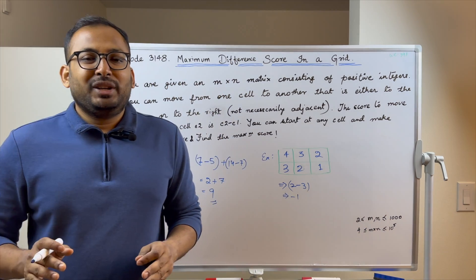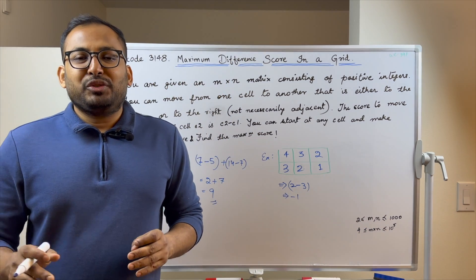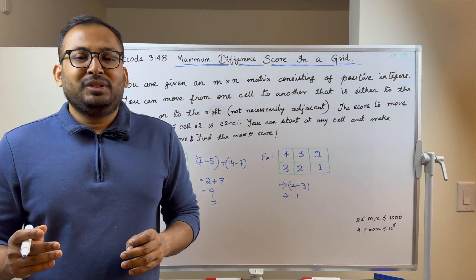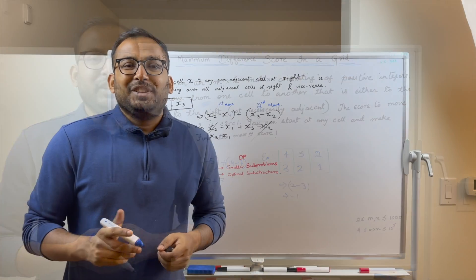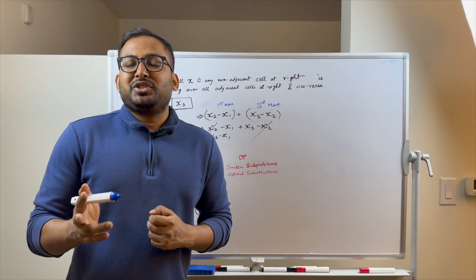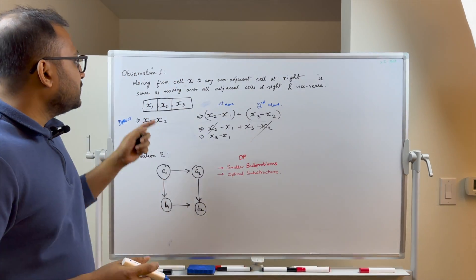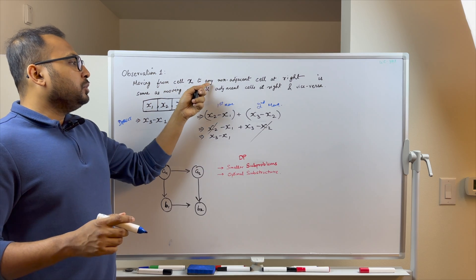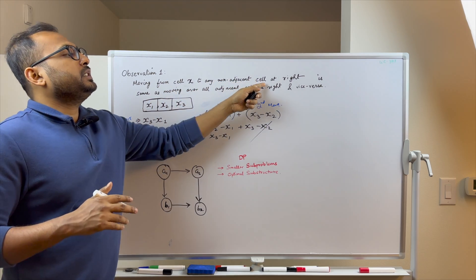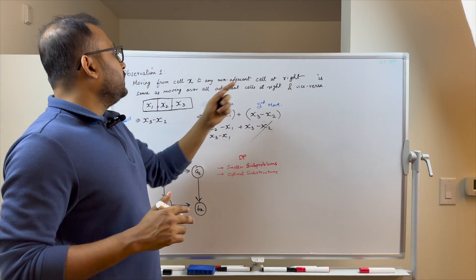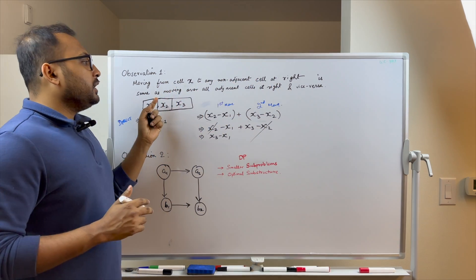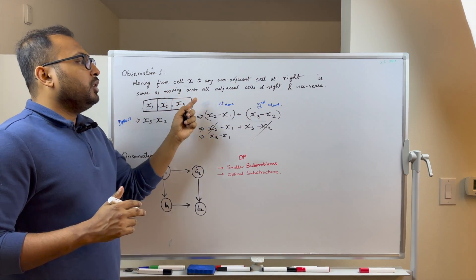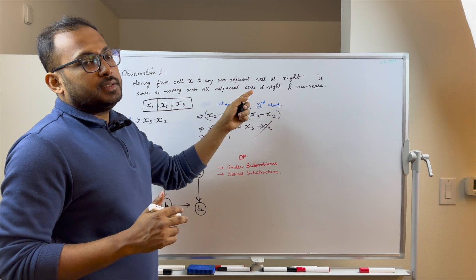Pause the video here if you want to think of a solution yourself. There are two key observations. The first observation is that moving from cell x to any non-adjacent cell towards the right is the same as moving over all the adjacent cells.